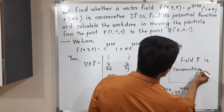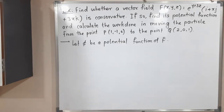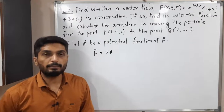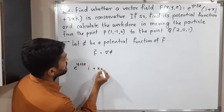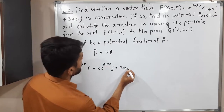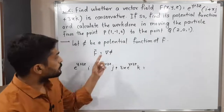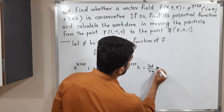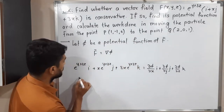Therefore, field F̄ is conservative. The first sub-question is complete. The next question: since it is conservative, we have to find the potential function. Let φ be a potential function of F̄, so φ is a scalar field satisfying F̄ = ∇φ. Our target is to find function φ. Setting F̄ equal to ∇φ: ∂φ/∂x i + ∂φ/∂y j + ∂φ/∂z k.